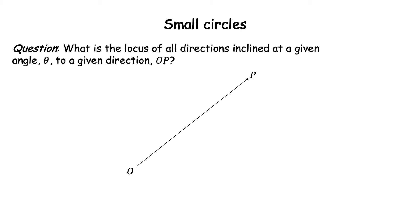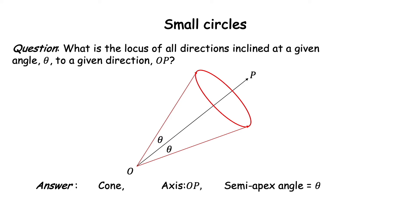What is the locus of all directions inclined at a given angle theta to a given direction OP? OP is the direction drawn from the origin O. In the plane of the screen we can find directions at angle theta on either side of OP, but thinking three-dimensionally we get a cone with axis OP and semi-apex angle theta. Any direction lying on the surface of this cone is always at angle theta to OP, so the solution is the surface of this cone.